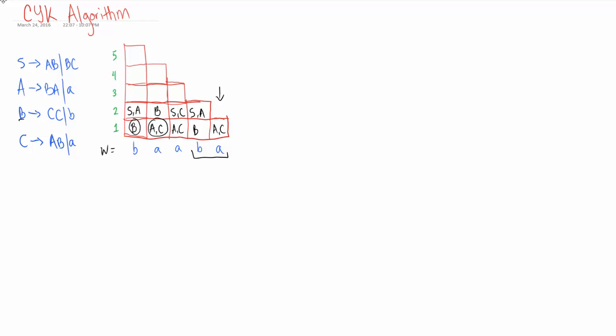Things get a little harder here. We're going to be looking at three letters at a time now, so we're going to be looking at BAA. Because we have three letters, we have different combinations of substrings: B and then AA, or BA and then A. Those are the two different combinations of substrings we can have for that beginning string of three letters.